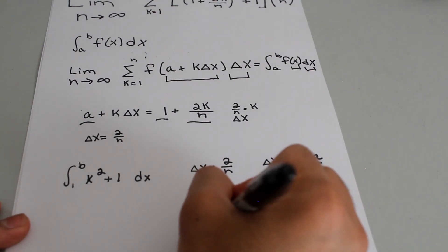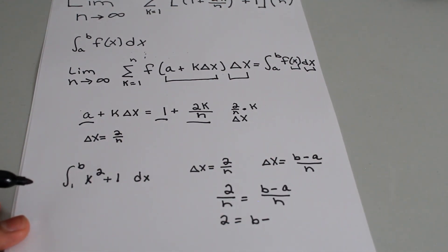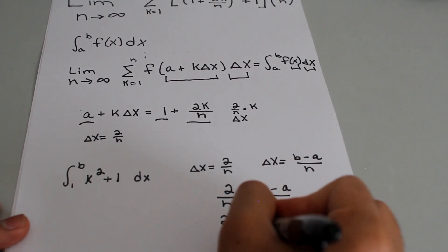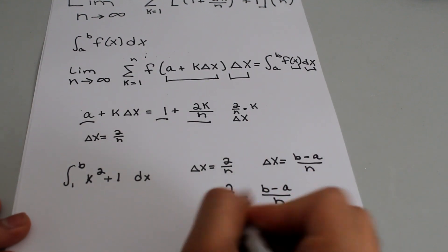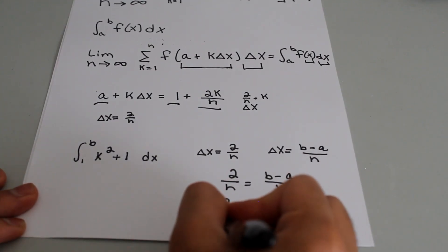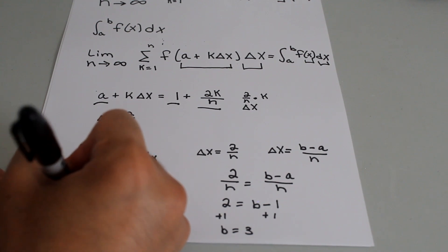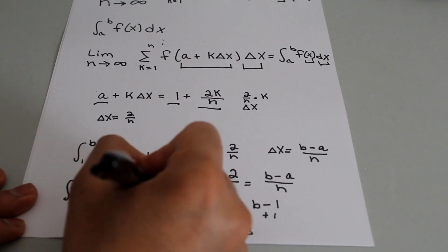So that means 2 equals b minus, and we determined that a is 1, so b minus 1. And to isolate b, we add 1 to each side. And b is equal to 3. So the integral goes from 1 to 3 of x squared plus 1 dx.